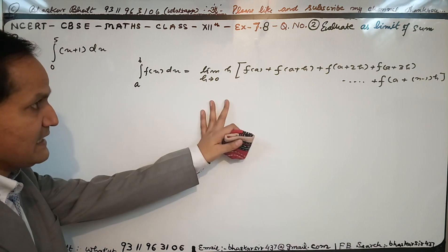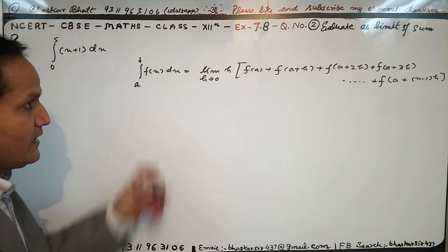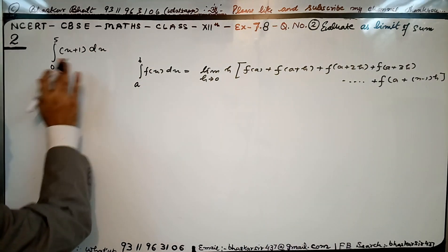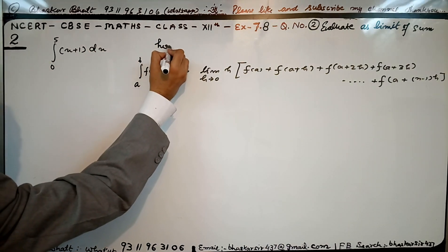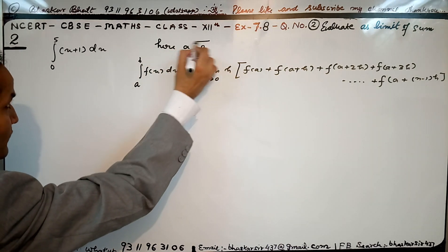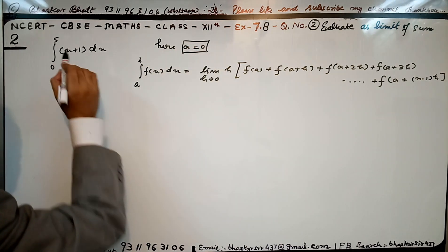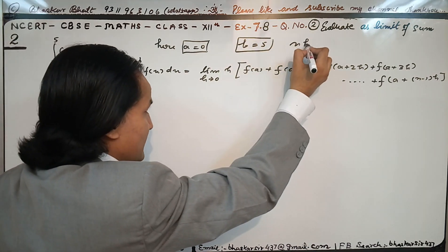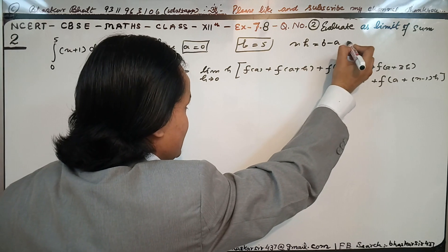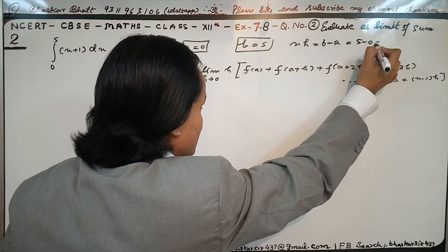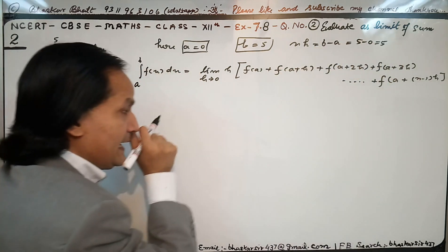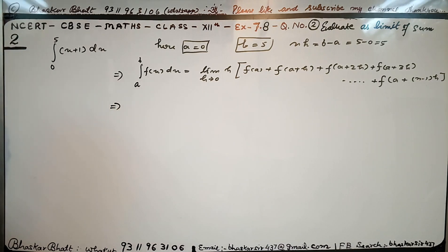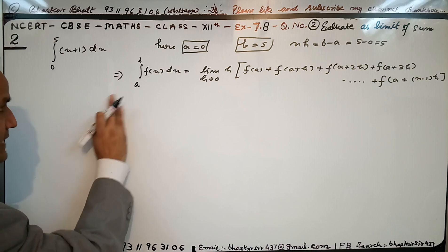हमने यहाँ define कर लिया है कि कैसे limit of sum को हम define करते हैं। अब मैं इसका use करूँगा अपने इस sum में। आप यहाँ देखेंगे: a equal to 0 है, b equal to 5 है। और n·h = b − a = 5 − 0 = 5 होता है। यह हमारे पास n·h है।